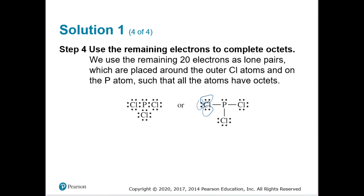Even if you fill in the lone pairs on the chlorines, don't forget the lone pair on phosphorus itself. Without those two electrons above P, phosphorus only has six electrons — but phosphorus wants eight. Those two lone pair electrons on P give it its octet.